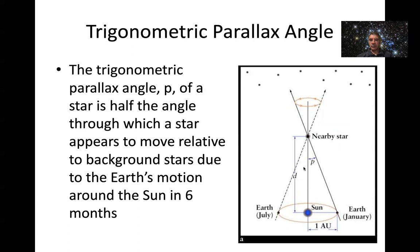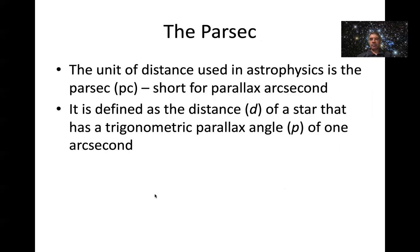So if we just go back to our diagram. So if P is one arc second and this is one AU, then this distance here, D, becomes one parsec. So if your parallax is one arc second, your distance away is one parsec. And in the workshop this afternoon, we'll use this definition to work out how many meters are in a parsec.